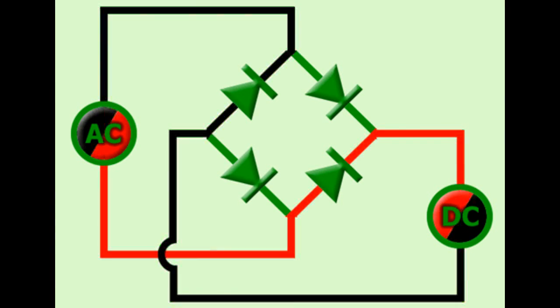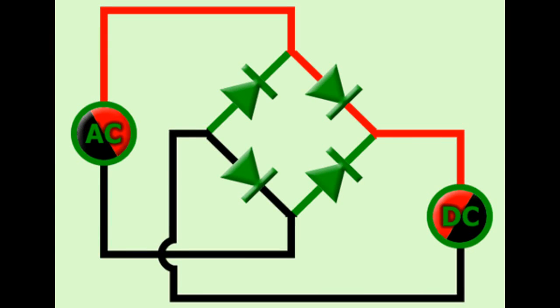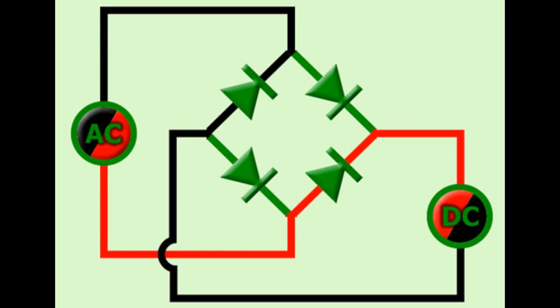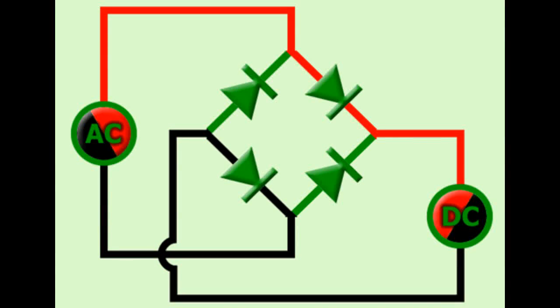A bridge rectifier is four diodes connected in bridge configuration. It converts the input AC voltage to pulsating DC voltage. The transformer secondary is connected to diametrically opposite points and the load resistance is connected to the other two points.